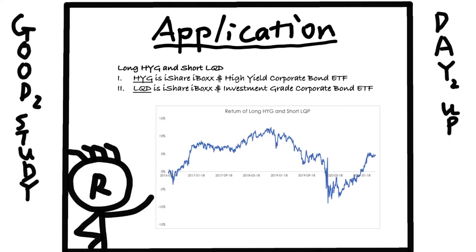How do we implement this strategy in our personal account? We can replicate this strategy by going long HYG, which is the high yield bond ETF, and shorting LQD, which is the IG bond ETF. Keep in mind that these ETFs hold a basket of high yield and IG bonds, so their maturities might not match perfectly, and not every broker will allow you to short LQD.